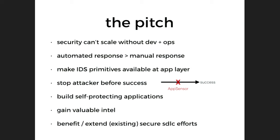We talk about IDS primitives conceptually. The idea behind AppSensor is about thinking about events and attacks and making those available at the app layer. This picture is kind of what AppSensor is about: the attacker takes this long to perform a successful attack — they'll try a lot of things, but it takes this long. We want to stop them at some point before that. On top of that, you heard in the keynote about self-protecting applications — that's kind of how we talk about AppSensor.